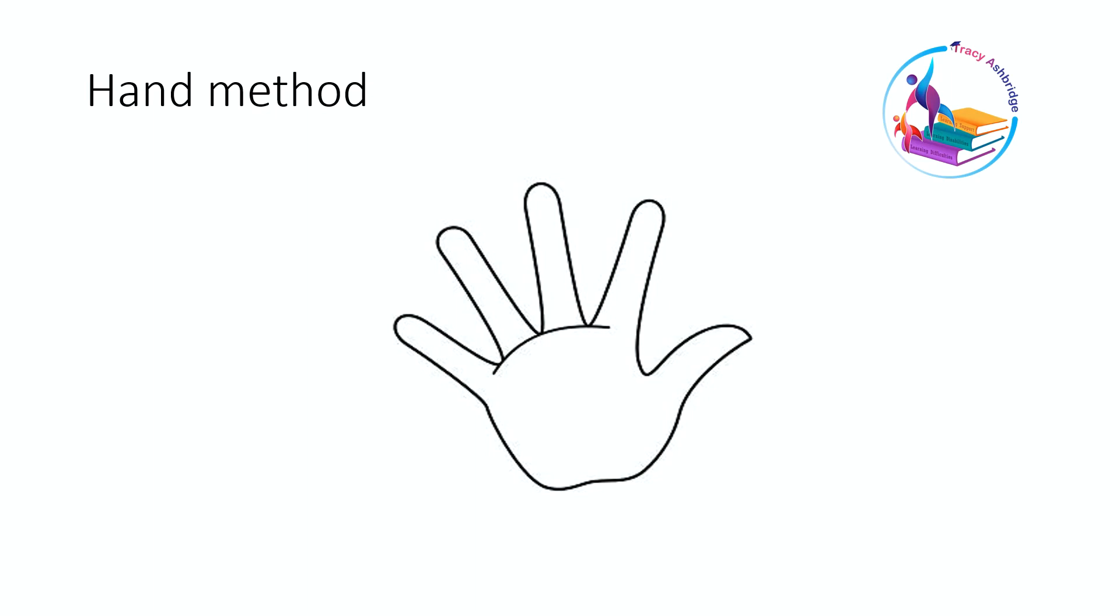If we're going to draw number one, number one comes down here into this space here. One. Two links around the thumb like so. Three also links around the thumb like so.